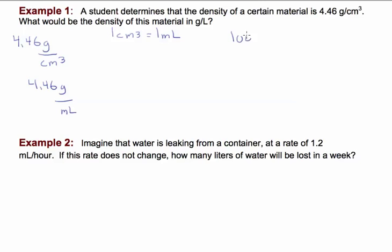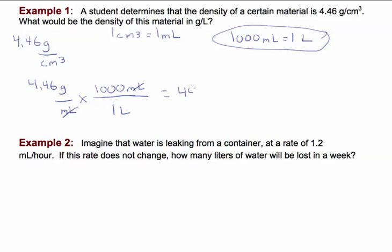You should also know that 1,000 milliliters equals one liter. We're going to use this conversion factor to do our dimensional analysis. We multiply by the conversion factor. If milliliters are on the bottom, they have to go on the top. We've not done dimensional analysis requiring you to convert units on the bottom, so be careful how you set them up. You get 4,460 grams per liter.